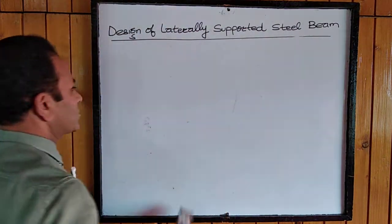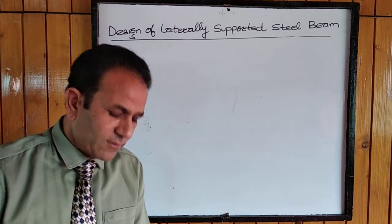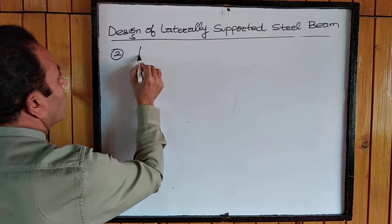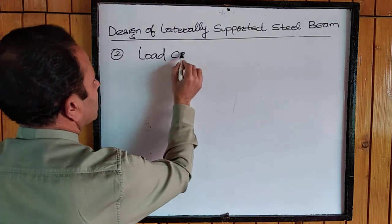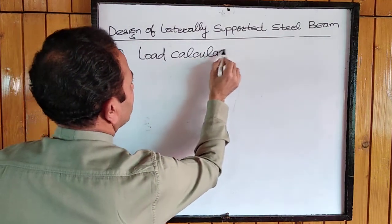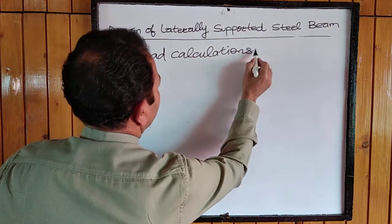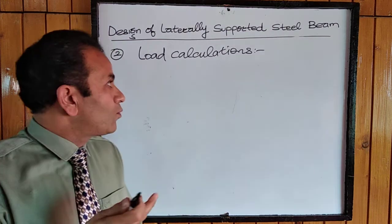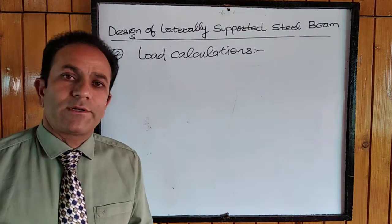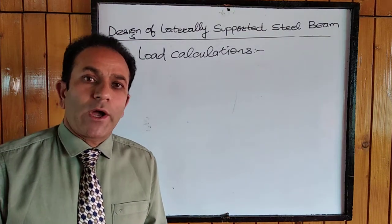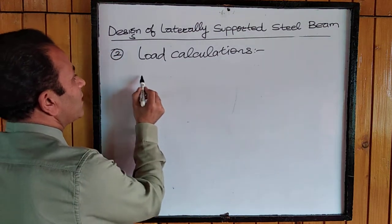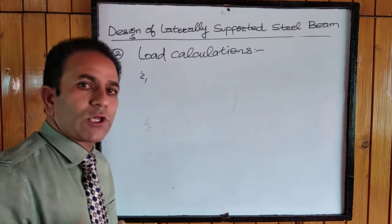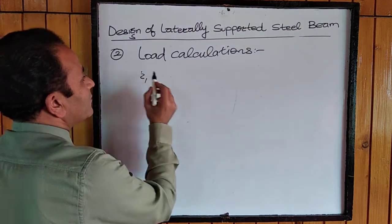In the second step we go for load calculations. We have to find the load for which our section should develop the required resistance. The load will include the dead load as well as the superimposed load.